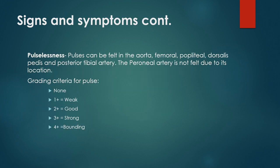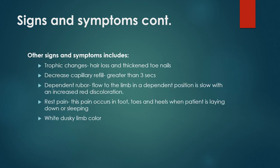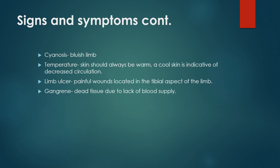Pulses can be felt in the aorta, femoral, popliteal, dorsalis pedis, and posterior tibial artery. The peroneal artery is not felt due to its location. Other signs and symptoms include trophic changes, hair loss, and thickened toenails; decreased capillary refill greater than three seconds; dependent rubor — flow to the limb in a dependent position is slow with increased red discoloration; rest pain in the foot, toes, and heels when lying down; cyanosis (bluish limb color); cool skin indicative of decreased circulation; painful limb ulcers on the tibial aspect; and gangrene — dead tissue due to lack of blood supply.